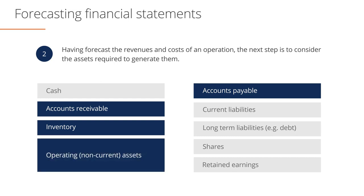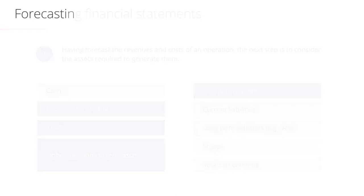We will leave all finance-related items on the balance sheet for later. Right now, we are only going to forecast operating non-current assets, accounts receivable, inventories, and accounts payable. We start with modeling property, plant, and equipment, or PP&E.